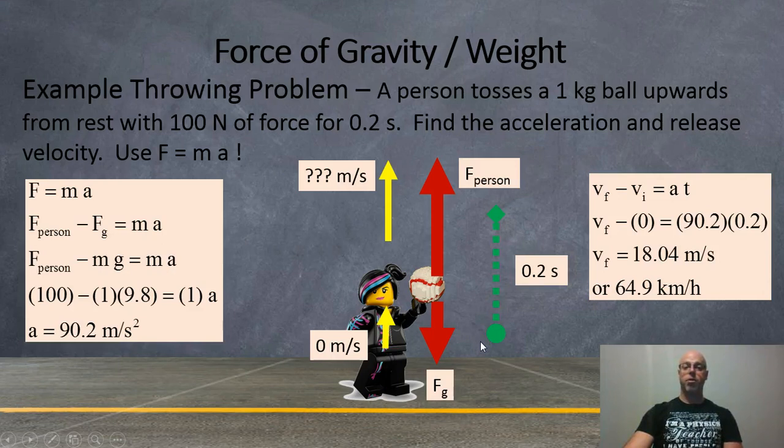Here's an example of a throwing problem, when you throw something up or catch it coming down. A person's going to throw a 1 kilo ball upwards, so they're going to toss it up from rest with 100 newtons of force. So, the applied force is 100 newtons. And they're going to do this for 0.2 seconds. So, find the acceleration and the release velocity of the ball. We're going to assume up is positive, and down is negative.